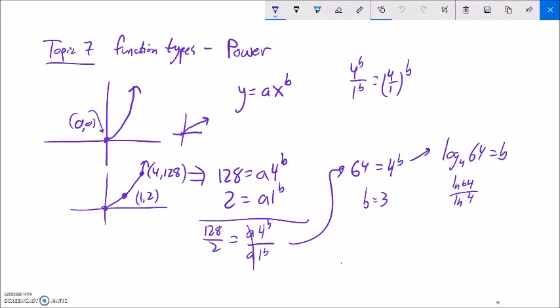So b is 3. So if b is 3, I can plug it back into any of the equations and figure out what a must be. So how about I plug it into this one? That looks easy. 2 equals a times 1 to the 3rd power. 1 to the 3rd power is 1. So a is 2.